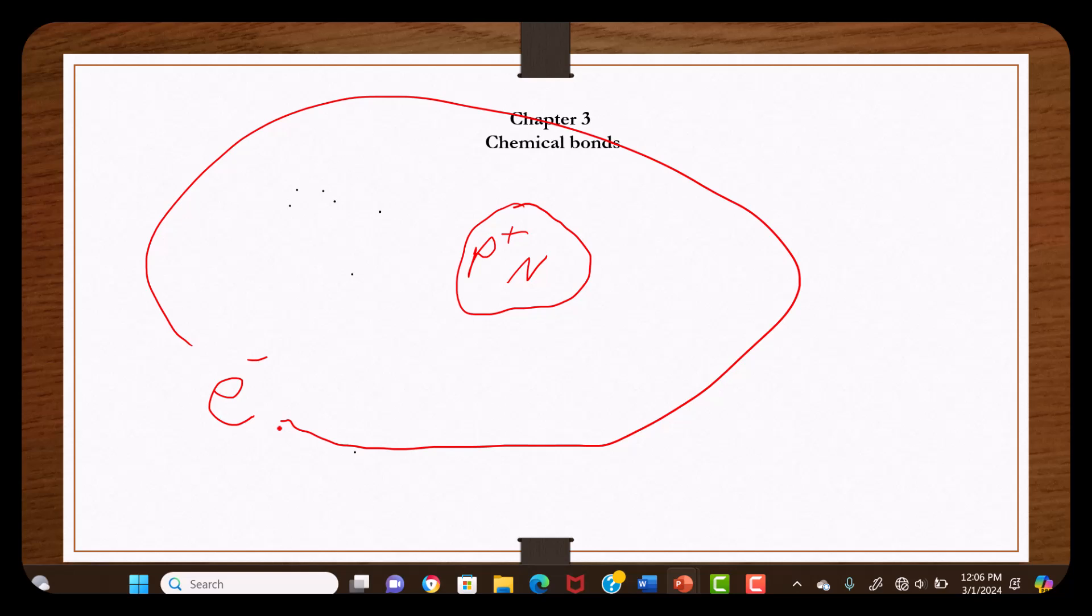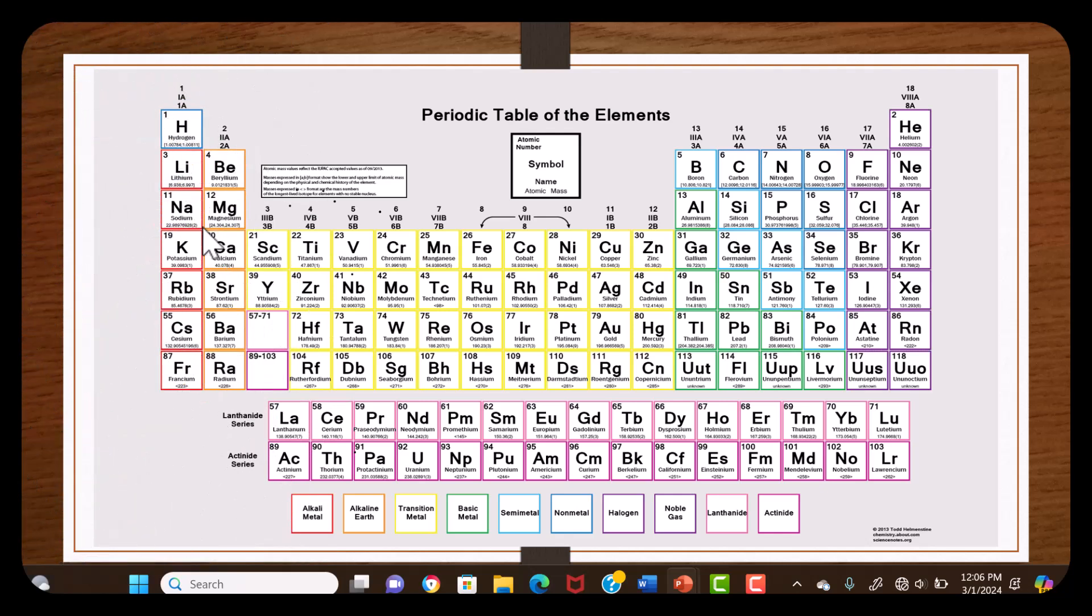We know that the periodic table is set up in rows that go horizontal, and these describe different shells. The first row would be period one with one shell, period two would have two shells, and period three would have three shells.